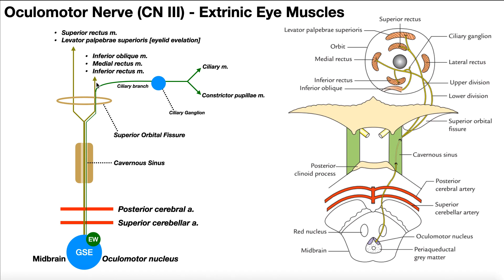The lower division goes to the other three extrinsic eye muscles controlled via cranial nerve 3: inferior oblique, which elevates the eye and turns it a little bit laterally; medial rectus, which turns it medially; and inferior rectus, which depresses the eyeball and moves it just a little bit medially.